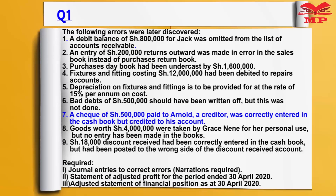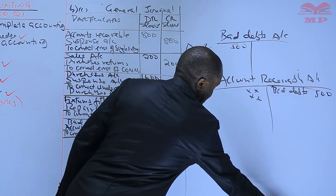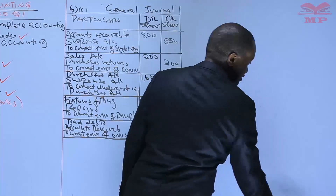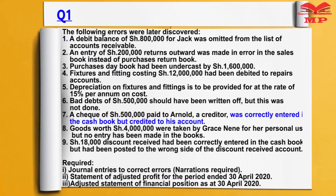Number seven: a check of 500,000 paid to Arnold, a creditor, was correctly entered in the cash book but credited to his account. Accounting is very simple as long as you understand simple English. The question says it was correctly entered in the cash book, so this correction will not affect the cash book — because the cash book has no problem. It was correctly entered, but credited to his account — that is the problem.